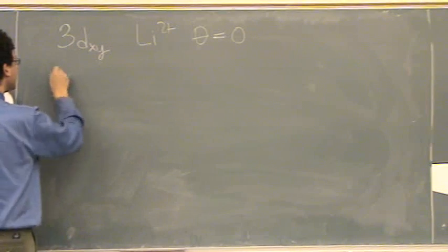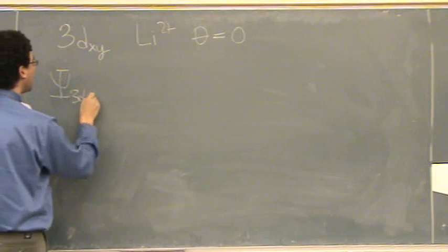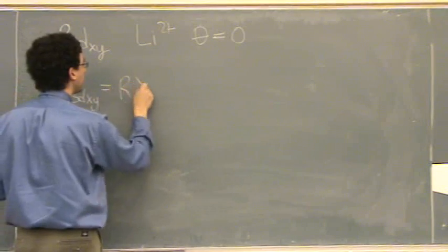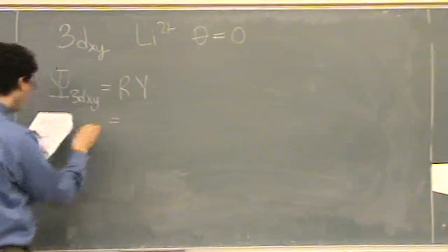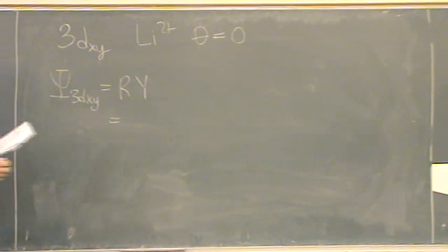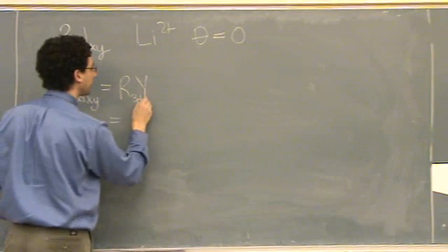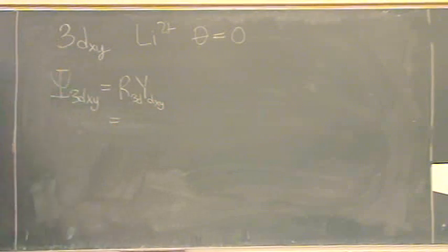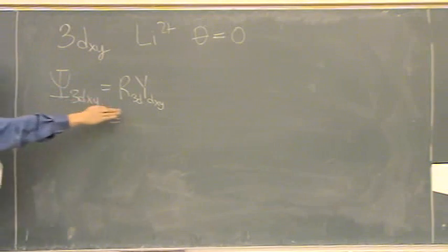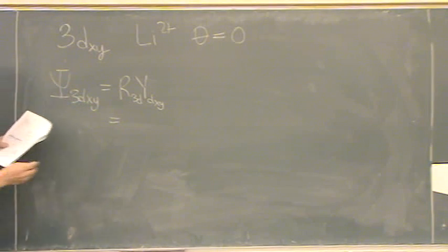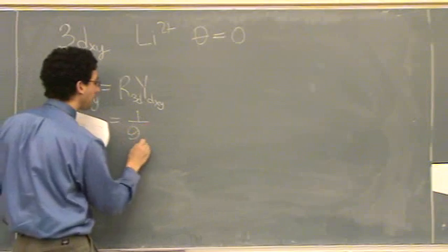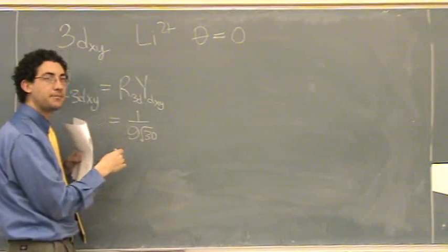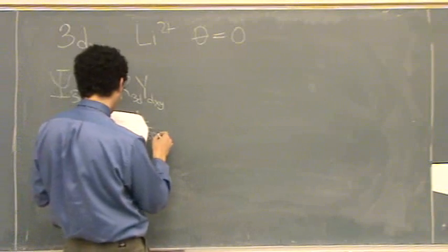So, the wave function for 3dxy equals the radial times the angular part. I'm going to put for the radial, and it'll say in your thing, radial 3d, and then for the y, 3dxy. So, you just look for this there, and for the radial, it says 1 over, I'll just copy it all down for now. You wouldn't have to do this actually to solve this particular problem, but I'll copy it all down so you can see how this works.